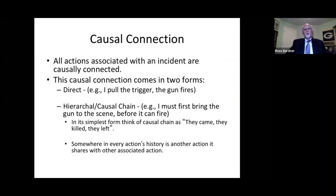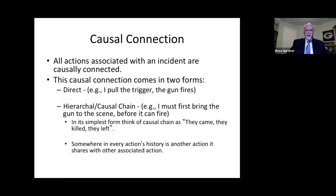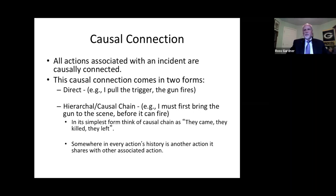When thinking about causal connection, there are two types. First is the direct — the easy one: I pull the trigger, the gun goes off; I open the door, the door opens. But there's another form: the causal chain, sometimes called a hierarchical chain. Before I can fire the gun, I've got to bring it to the scene and load it — there's a causal chain connecting those actions. In its simplest form, think of a causal chain as: they came, they killed, they left. Break that chain and the things don't happen. Somewhere in every action's history is another action that it shares an association with.